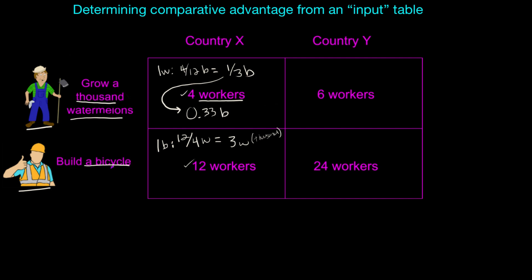Now let's calculate the opportunity cost of watermelons and bicycles in Country Y. The six workers needed to produce one thousand watermelons could have produced only six over twenty-four bicycles, since twenty-four workers are needed for a single bicycle. That is one-fourth of a bicycle per watermelon, or 0.25 bicycles per watermelon.